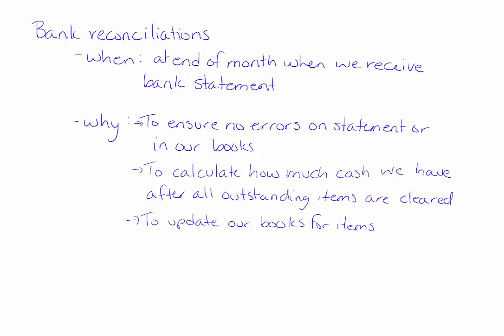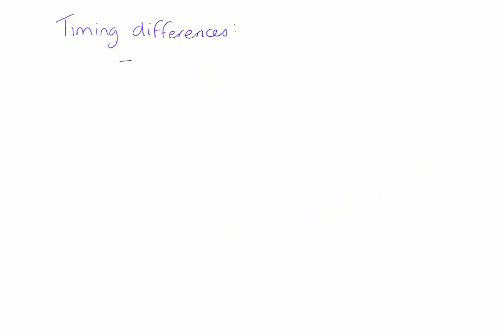Under the why section, there are two general categories: errors, and timing differences. There are going to be timing differences between our books and our bank statement. When we write a check to a customer, we record the money as going out of our account as soon as we write that check, but the check needs to go through the mail, which can take a few days. So when the check actually comes out of our bank account, it may be a few days or even a week later. These are called outstanding checks.